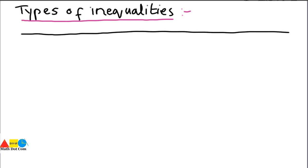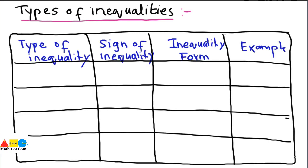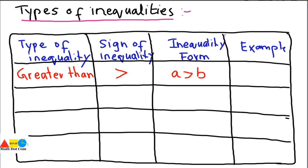We have four types of inequalities. We will make a table with columns for: type of inequality, sign, inequality form using two variables, and an example. The first type is 'greater than.' Its sign opens on the side where the number is greater and closes on the side where the number is smaller. For example, five is greater than two.